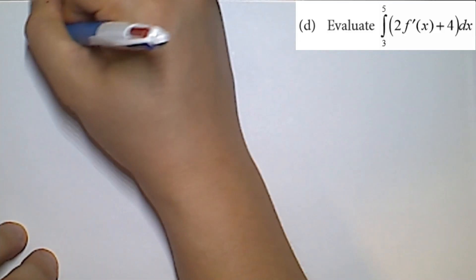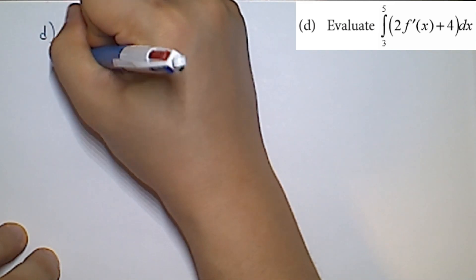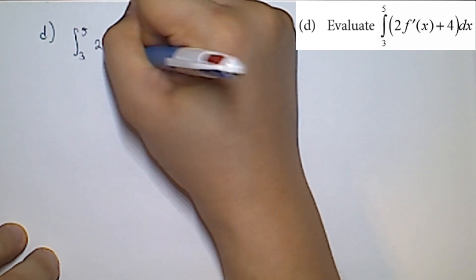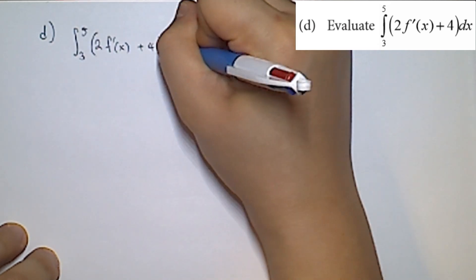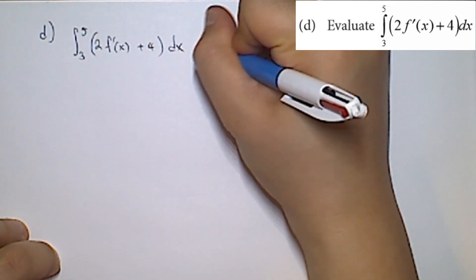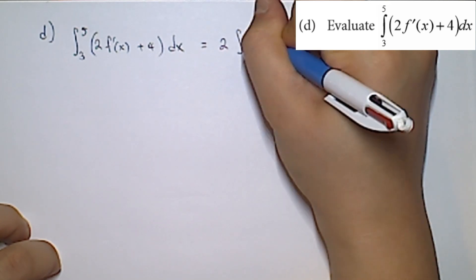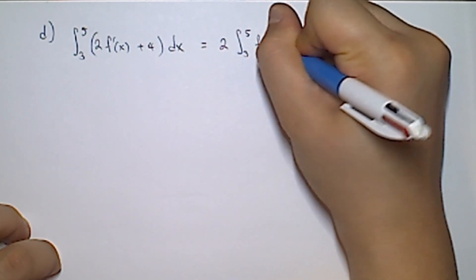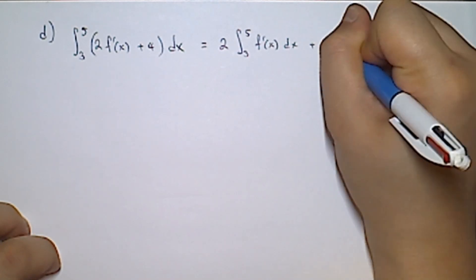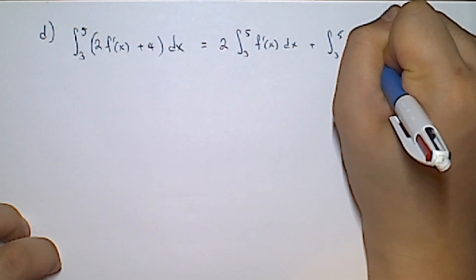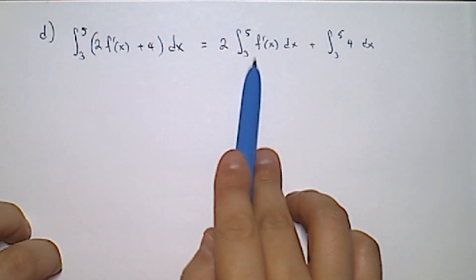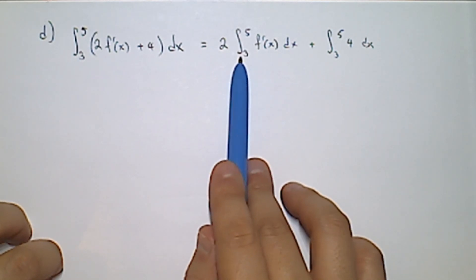Part D is straightforward: evaluate the integral from 3 to 5 of (2 times f′(x) plus 4) dx. We rewrite this as 2 times the integral from 3 to 5 of f′(x) dx, plus the integral from 3 to 5 of 4 dx. Applying the Fundamental Theorem of Calculus, integrating f′(x) gives f(x).